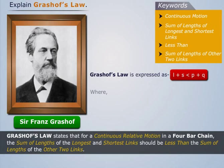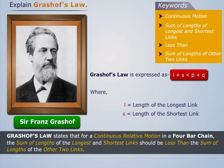Grashoff's Law is expressed as l + s < p + q, where L is the length of the longest link, S the length of the shortest link, and P and Q are the lengths of the other two links.